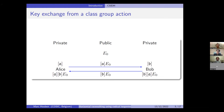This looks very nice theoretically — group action-based key exchanges are very simple. But there is a bit of a gap between theory and practice, because if you want to do CSIDH, you need to be able to compute this group action. You need to know what these magical ideal classes do with elliptic curves. And if you look at the CSIDH protocol, you don't really even see this class group action that much anymore — it's kind of hidden under the hood.